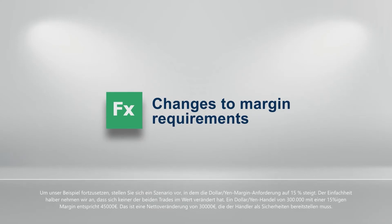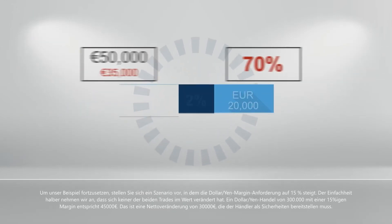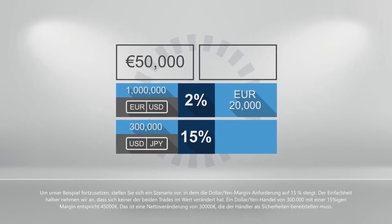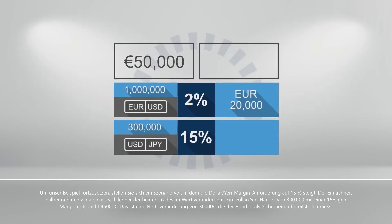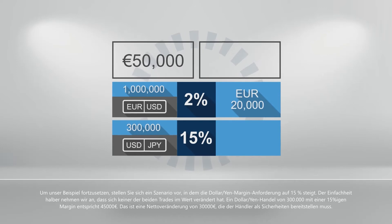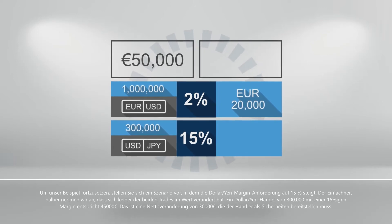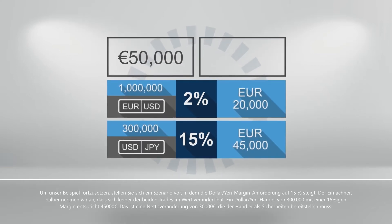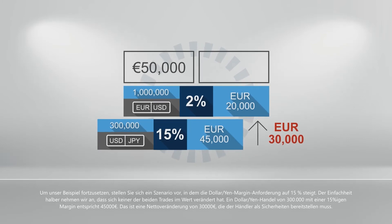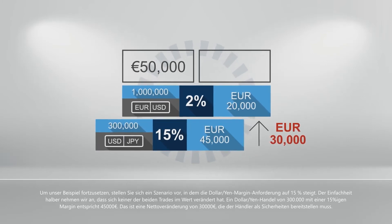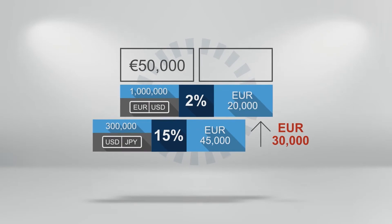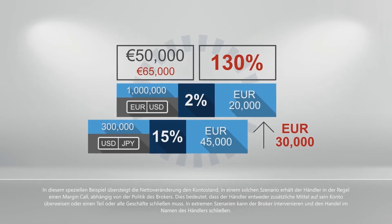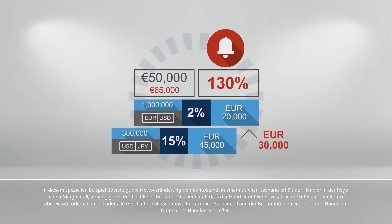Continuing our example, imagine a scenario where the dollar-yen margin requirement increased to 15%. For the sake of simplicity, let's assume that neither of the two trades has changed in value. A dollar-yen trade of 300,000 with a 15% margin equals 45,000 euros — a net change of 30,000 euros that the trader will have to provide as collateral. In this particular example, this net change exceeds the account balance, and in such a scenario the trader usually receives a margin call.